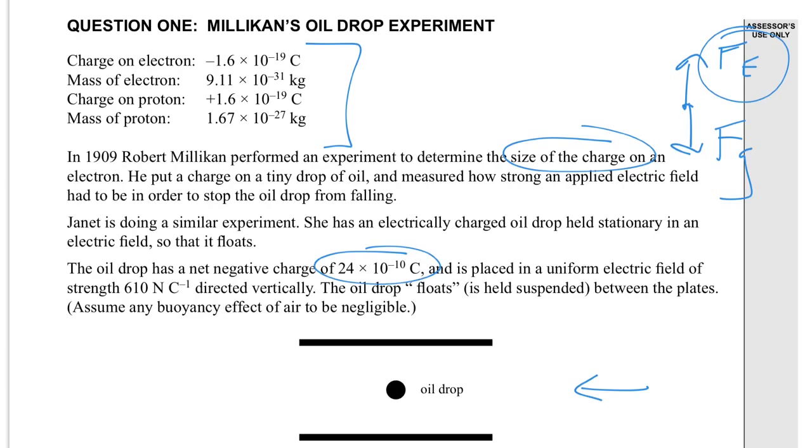So there's the oil drop that's presumably got a force due to gravity, and upwards has the suspended between the plates by the electric field. An electric field has an electric field strength E of 610 newtons per coulomb.